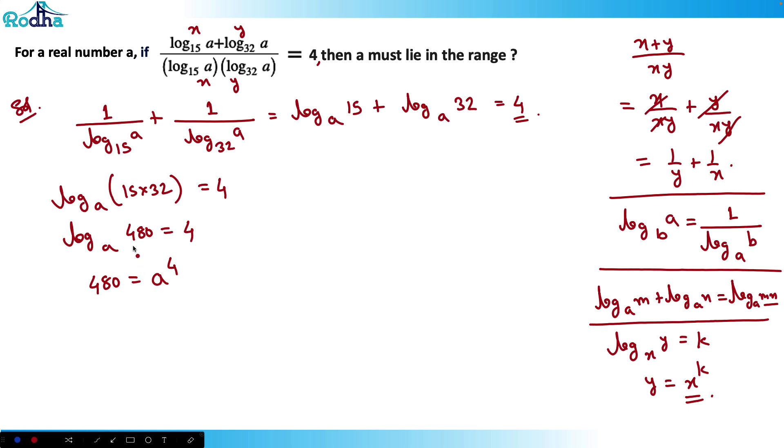If you look at the options in the question, options are given like this: a is between 2 and 3, a is between 3 and 4, then a is between 4 and 5, and a is more than 5.